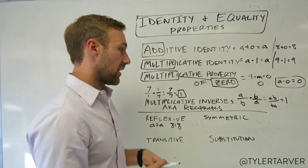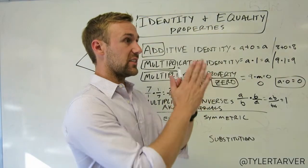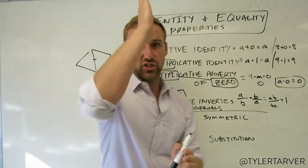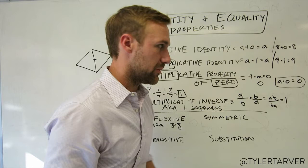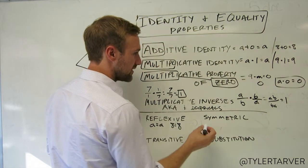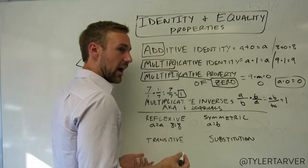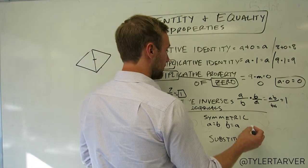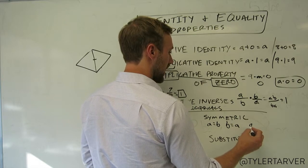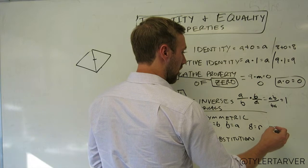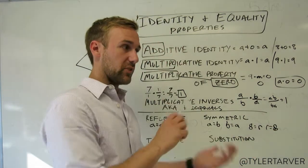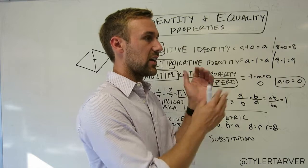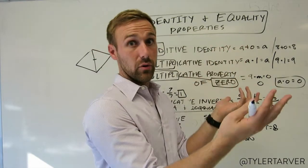The symmetric property: symmetry means something looks the same on both sides. The symmetric property means that if a equals b, you can flip it and say b equals a. So if eight equals r, then r equals eight. Usually you only use that at the end of a proof when you want things to look pretty — you're allowed to flip it.